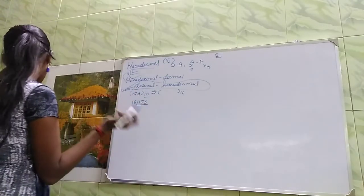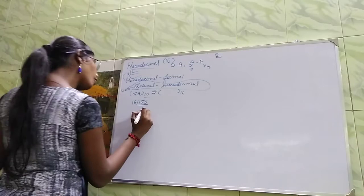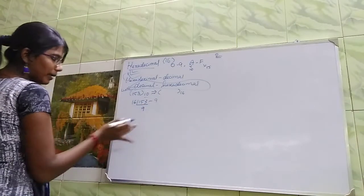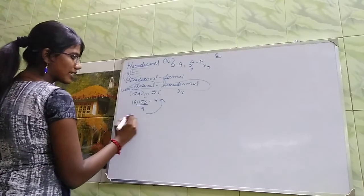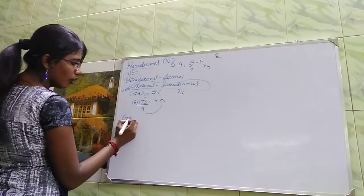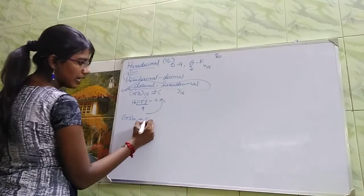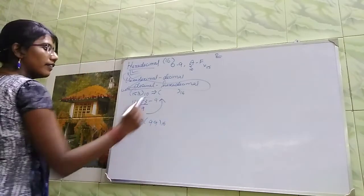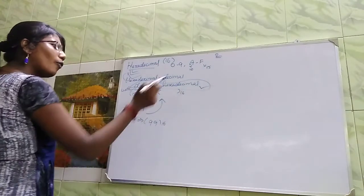153 divided by 16 is 9 times, remainder 9. So 99 will be the answer. 153 of 10 implies 99 of 16.